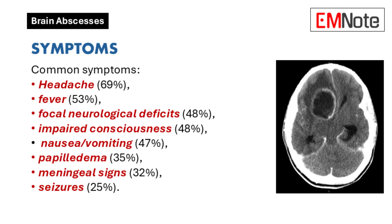Symptoms. The most common symptoms of brain abscesses include headache (69%), fever (53%), focal neurological deficits (48%), impaired consciousness (48%), nausea and vomiting (47%), papilledema (35%), meningeal signs (32%), and seizures (25%).